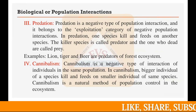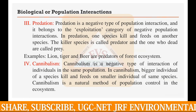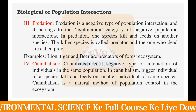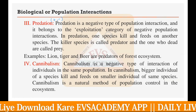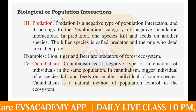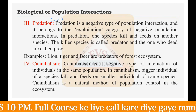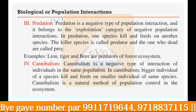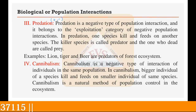The next negative interaction is predation. One organism eats another organism — the relationship is positive for the predator and negative for the prey. The prey is the organism being eaten and the predator is the one doing the eating. Examples of predators in forest ecosystems are lion, tiger, and bear. In ocean ecosystems, sharks are the predators.